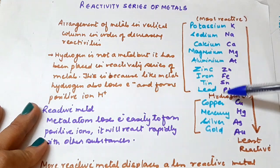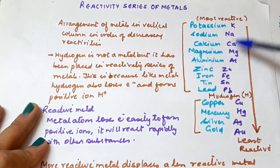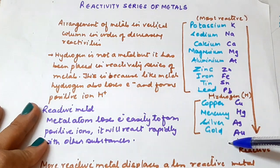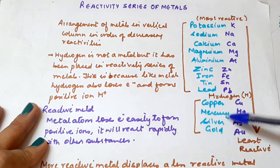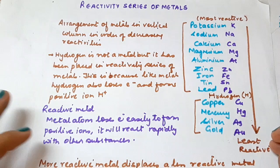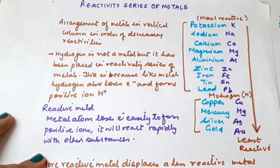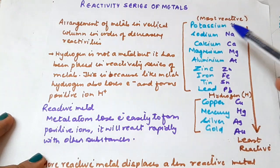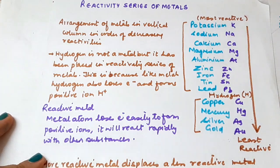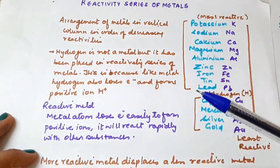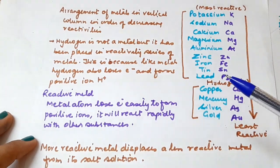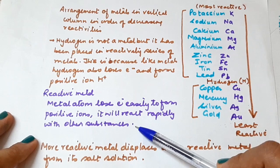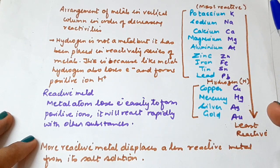The metals above hydrogen are more reactive, and the metals below hydrogen — copper, mercury, silver, gold — are less reactive than hydrogen. When we talk about reactive metals, it means any metal which loses its electrons very easily to form positive ions, and this means that it will react with other substances rapidly. That is a reactive metal.